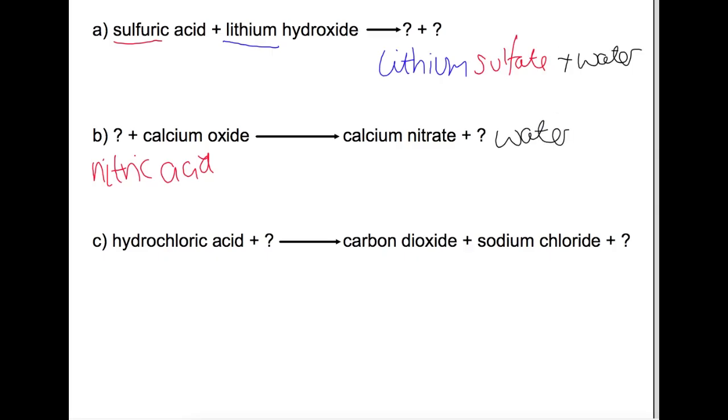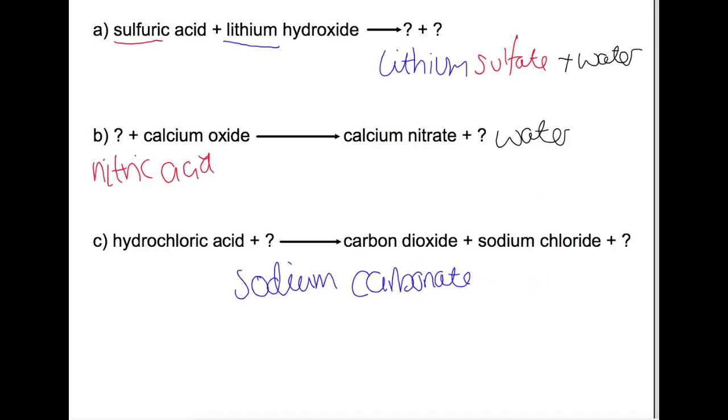And in the final reaction we have sodium chloride, which gives us an indication of what we should have as our base. So it's going to begin with sodium. We've also given off carbon dioxide, which means that we must have had a carbonate, so we've got sodium carbonate, and then we're also missing our water as a product.